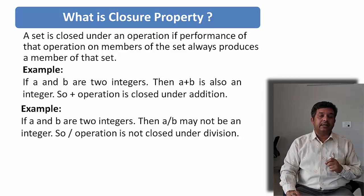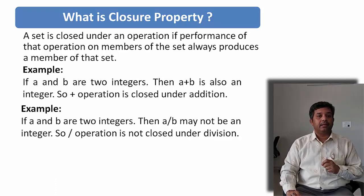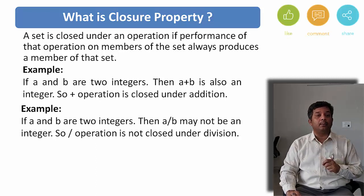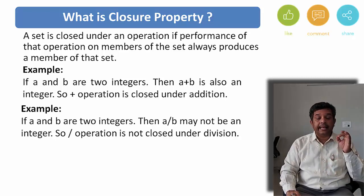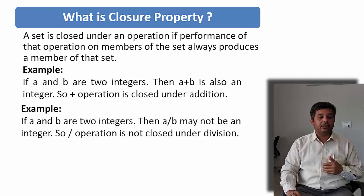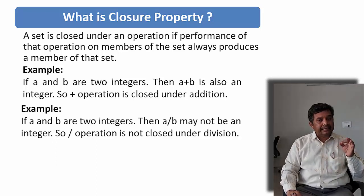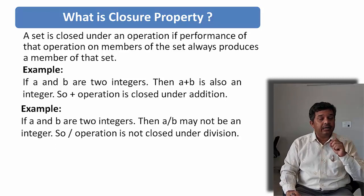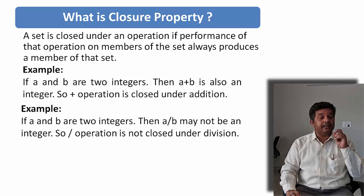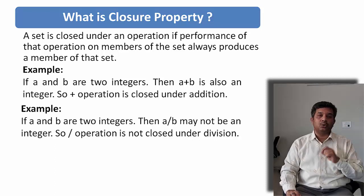Let us take one more example. The same set of integers — we are taking two elements from it and performing division. If we take any two integers and perform division, the operation may not be closed. For example, 6 divided by 2 gives 3, which is an integer. But 5 divided by 2 gives a result that is not an integer. That is why division on the set of integers is not closed.